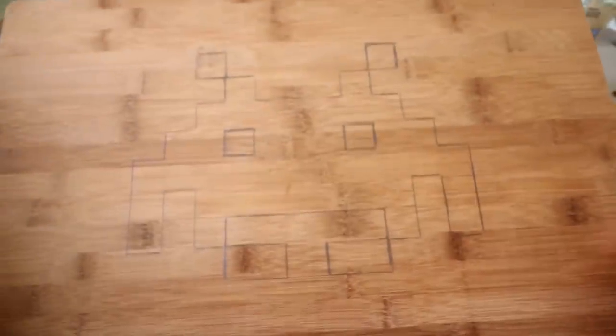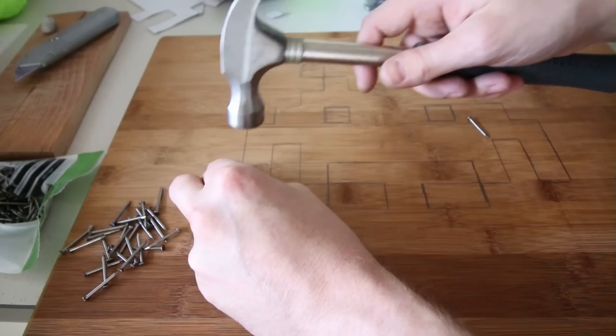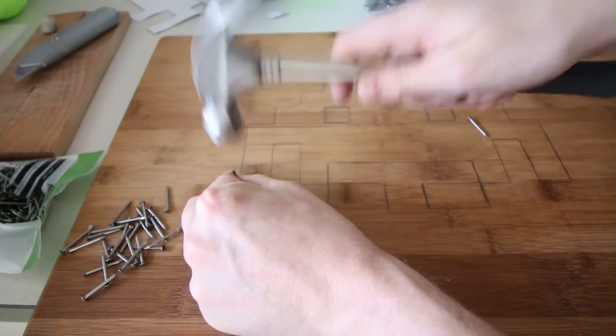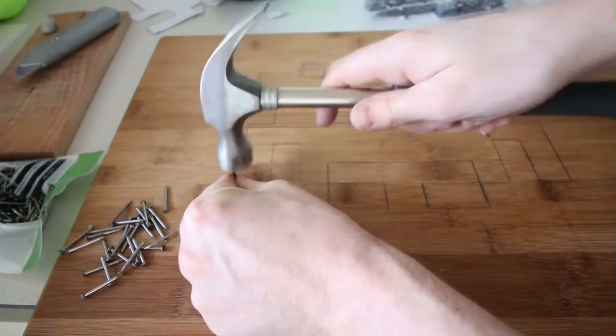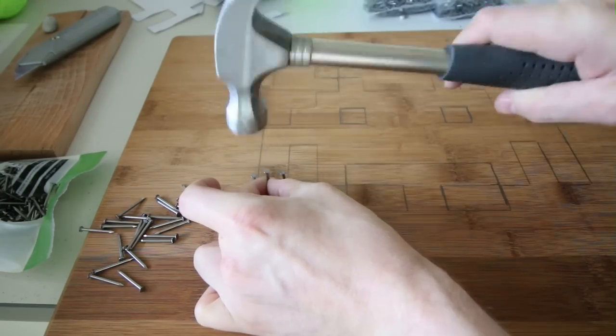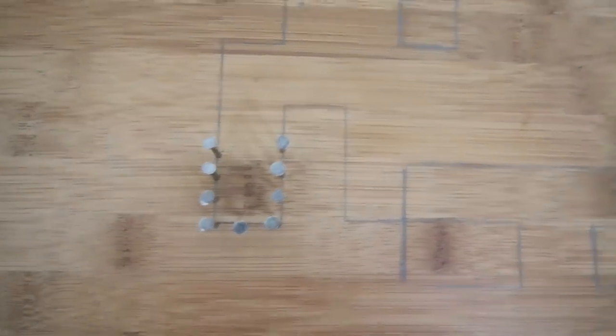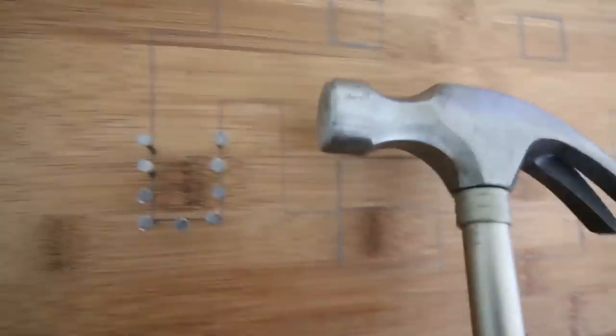Once I had the outline of the Space Invader, it was time to add some nails. I hammered in the nails along the lines, trying to keep an equal amount of space in between. Don't worry if you make a slight error as you can always use the hammer to realign the nail.